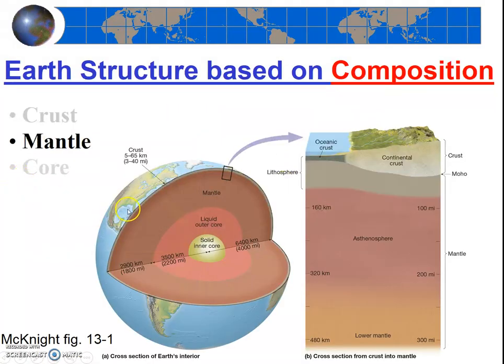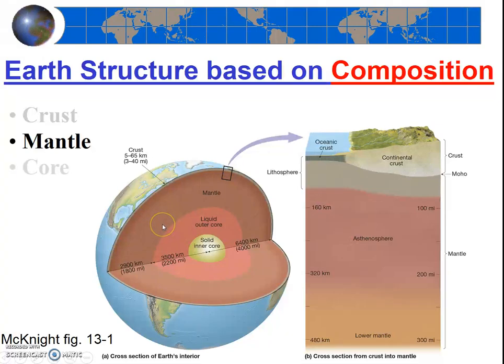Next we'll move deeper into the earth, into the layer called the mantle. The mantle makes up the greatest percentage of the earth in terms of the three layers—over 80 percent of the earth by volume would be considered mantle material. The mantle is about 1,800 miles thick, and it's primarily composed of a rock called peridotite.